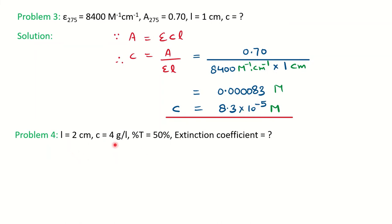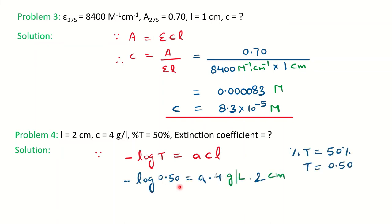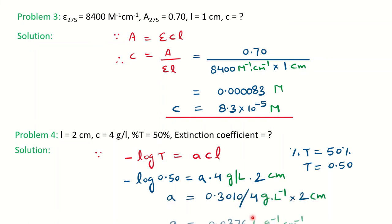In the next problem, L, concentration C, and percentage transmittance are given; they ask you to calculate the molar extinction coefficient — which is actually the absorptivity, small 'a', because the concentration is given in grams per liter. Put the formula: −log(T) = aCL. Percentage transmittance is 50%, so T = 0.50. Keeping all values, you can find the absorptivity in liter per gram per centimeter.